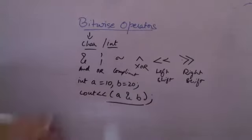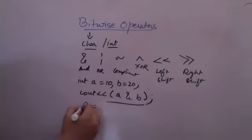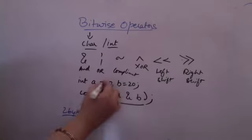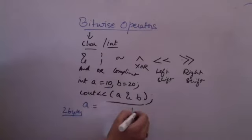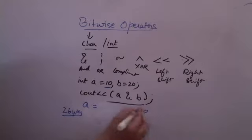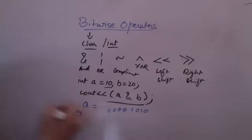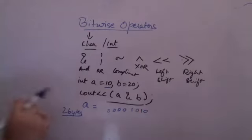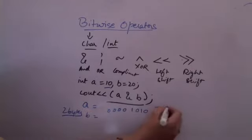What do I mean by bits? Let us convert A into binary. A is 10. Whether assuming 2 bytes or 4 bytes of data, 10 is represented in binary as 1010. With the remaining bits as 0s. I am taking just 8 bits for reference — the last 8 bits — so I am not taking the higher bits into consideration right now. This is A because A is 10.